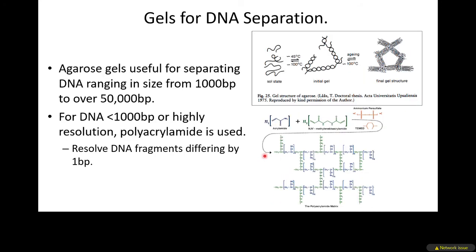Agarose gels are good for separating fragments from about 1,000 to 50,000 base pairs. For smaller pieces of DNA, polyacrylamide is better — polyacrylamide gels can resolve DNA fragments that differ by a single base pair.